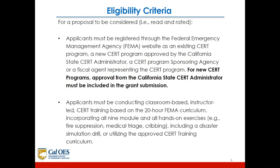For a proposal to be considered read and rated, applicants must be registered through the FEMA website as an existing CERT program, a new CERT program approved by the California State CERT administrator, a CERT program sponsoring agency, or a fiscal agent representing the CERT program. For a new CERT program, approval from the California State CERT administrator must be included in the grant submission. Applicants must be conducting classroom-based instructor-led CERT training based on the 20-hour FEMA curriculum, incorporating all nine modules and all hands-on exercises — including fire suppression, medical triage, and a disaster simulation drill — or utilizing the approved CERT training curriculum.